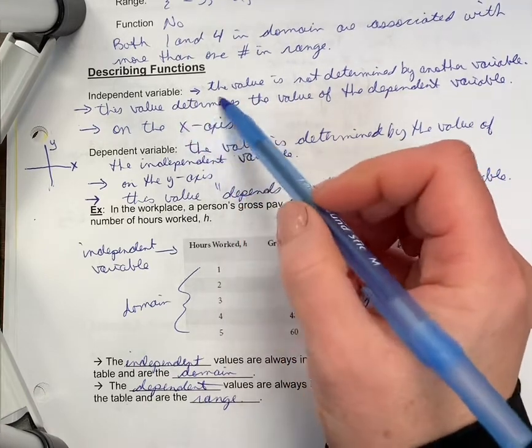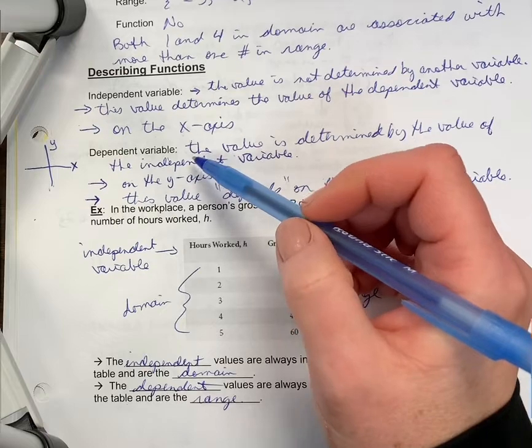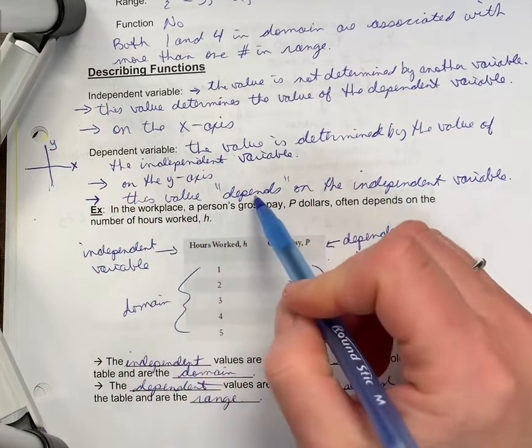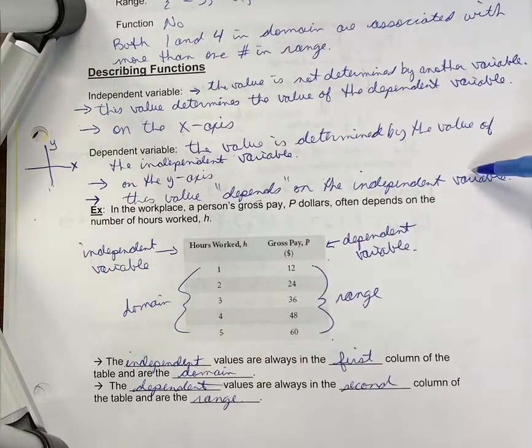The independent variable is sometimes called the input. The dependent variable could be the output. It's going to be on the y-axis or vertical axis, and this value depends on the independent variable.